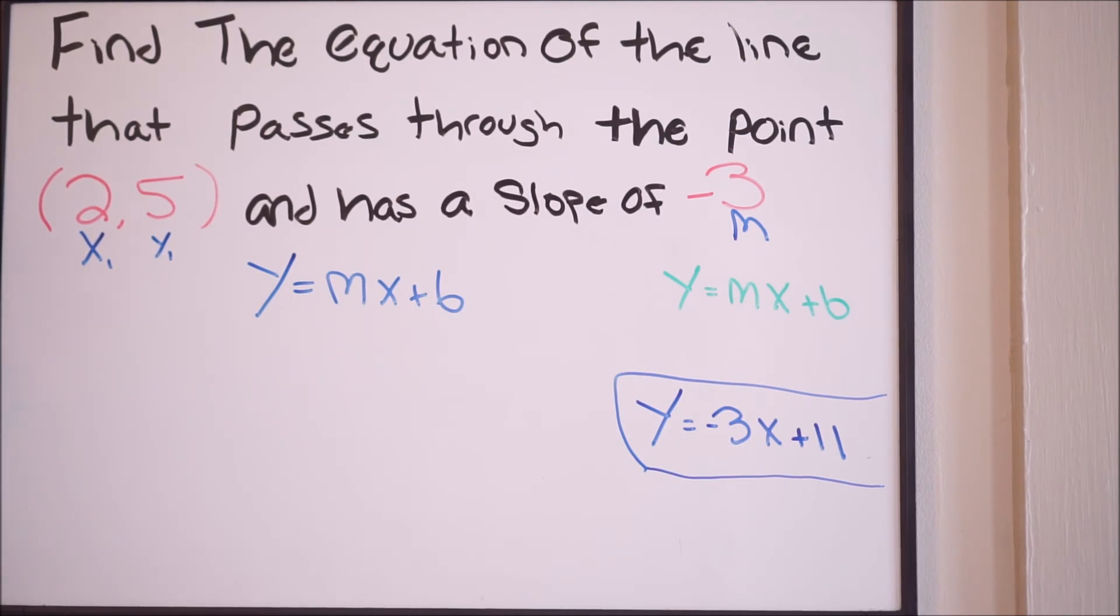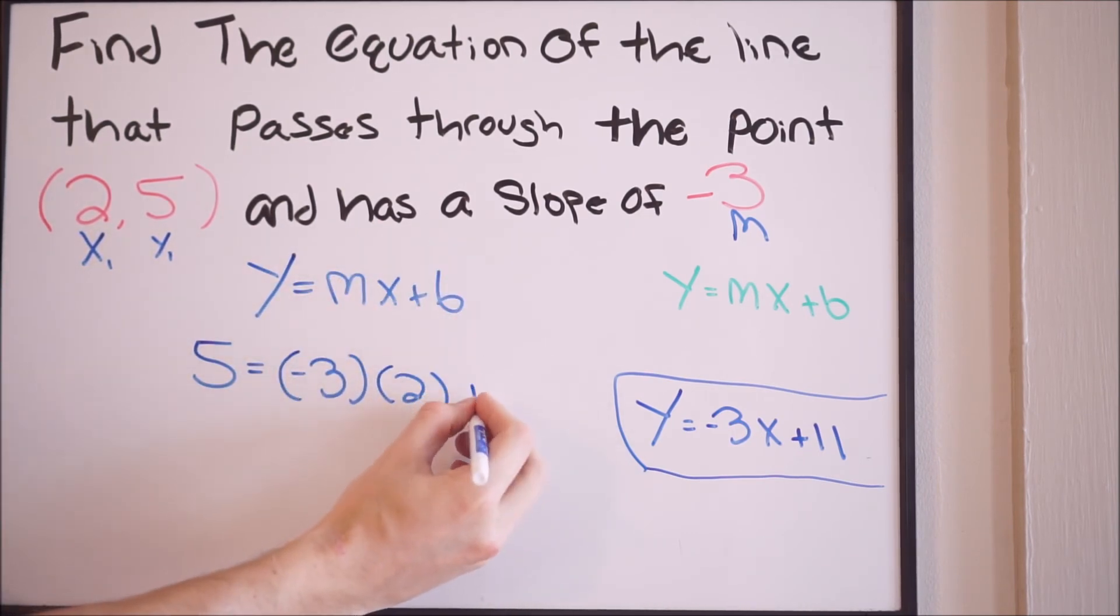So when I plug those values in, I'll solve for b, and then I'll plug in my final answer at the end. So let's go ahead and do this. My y here is going to be 5, so I have 5 equals my slope, which is negative 3, times my x, which is 2, and then plus b.